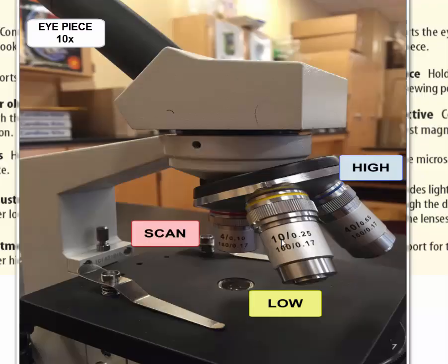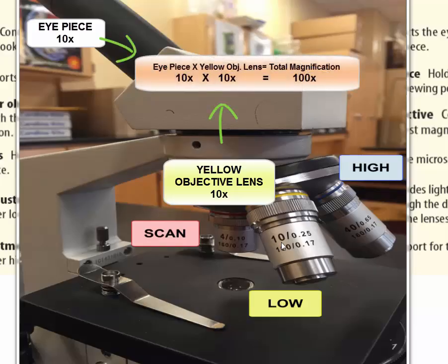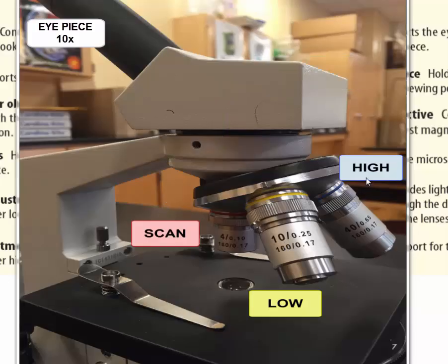The low power lens, the yellow one, has a 10 here. So when we switch on to this that's going to give us a total magnification of 100 power. 10 power for the lens and then 10 power for the eyepiece. And then lastly we have the high power lens.